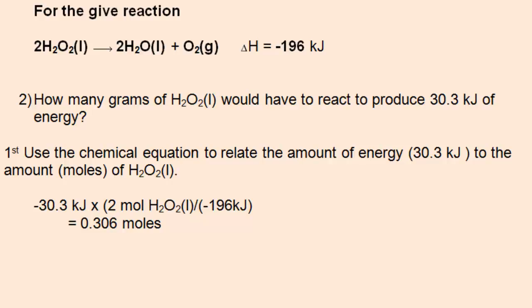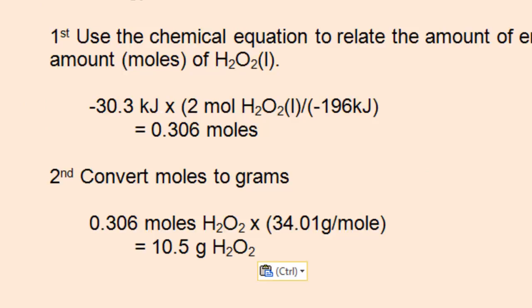You could set this up using dimensional analysis using the proportion in the equation, 2 moles of hydrogen peroxide for every 196 kilojoules of heat. You'll come up with 0.306 moles of hydrogen peroxide. The second step would be to convert the moles of hydrogen peroxide to grams of hydrogen peroxide.